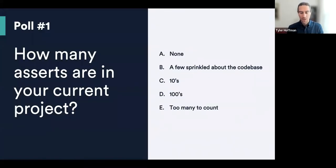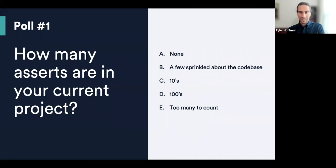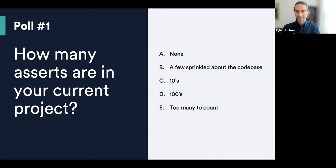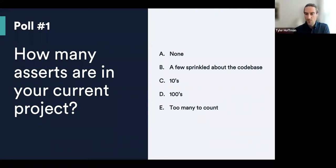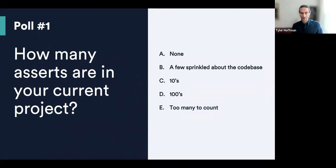Before we get too much further, I'd like to run a poll — I'm curious how many asserts are in your current project. If you had to give a rough guess, it ranges from none to too many to count. About 30% are saying none, about 25% are saying a few, then tens and hundreds about 20%, and too many to count 10%. I hope I can trend that chart downwards to where people are more convinced to actually use asserts.